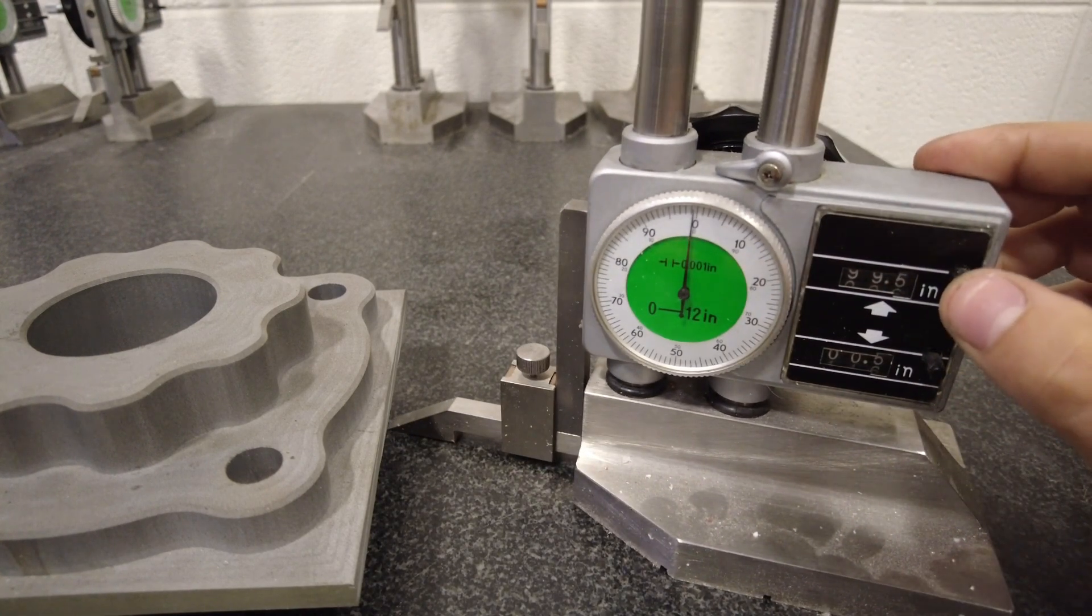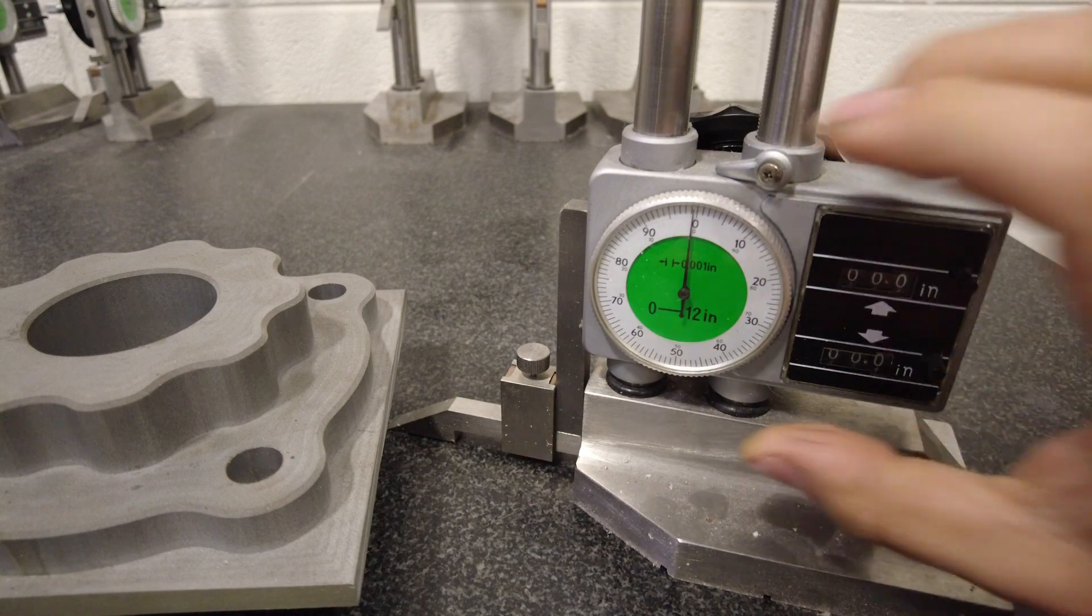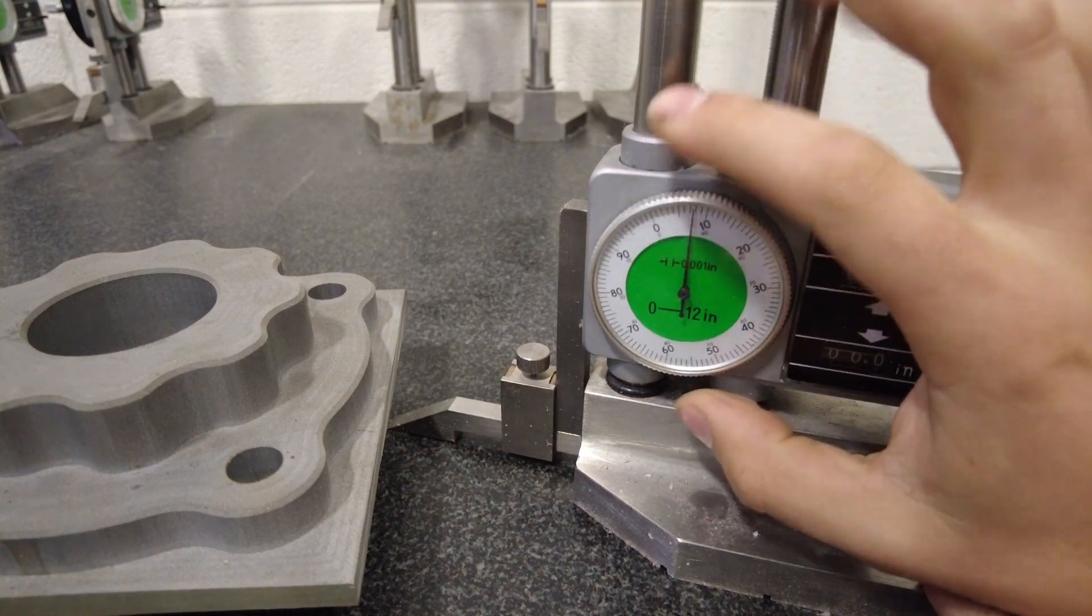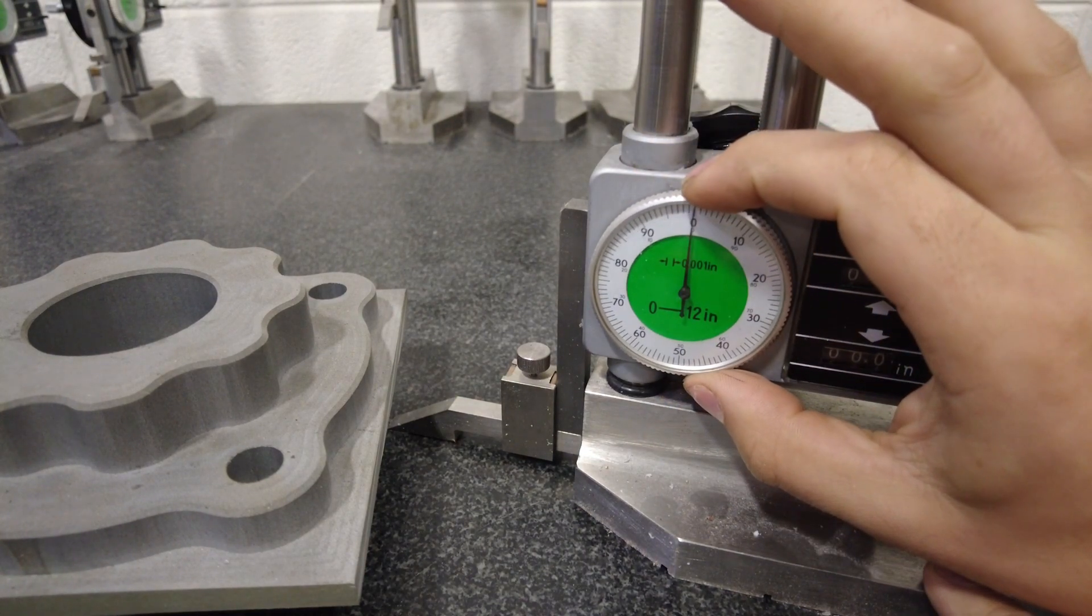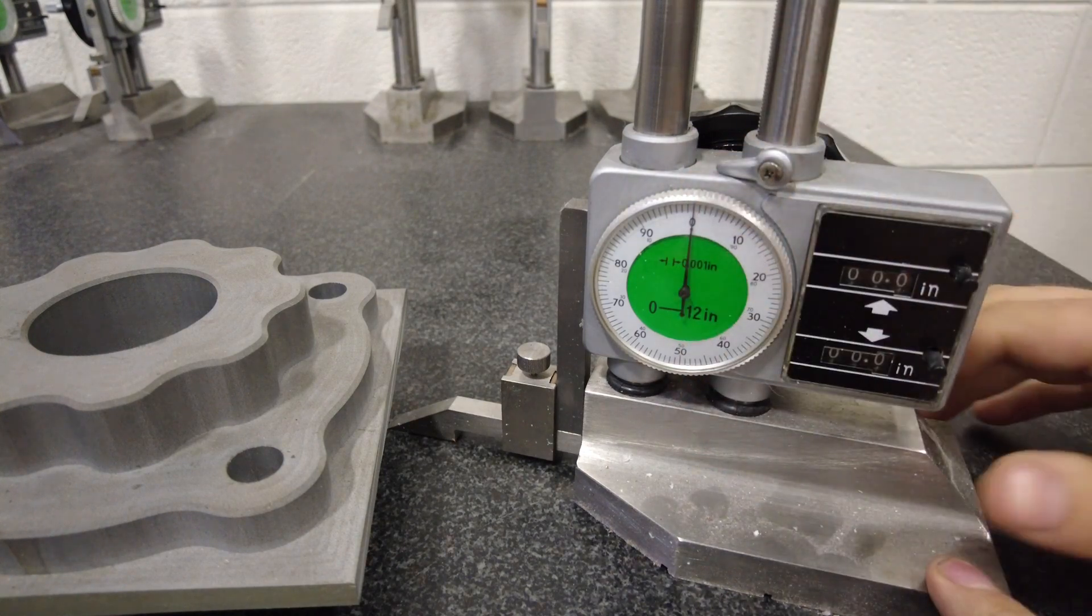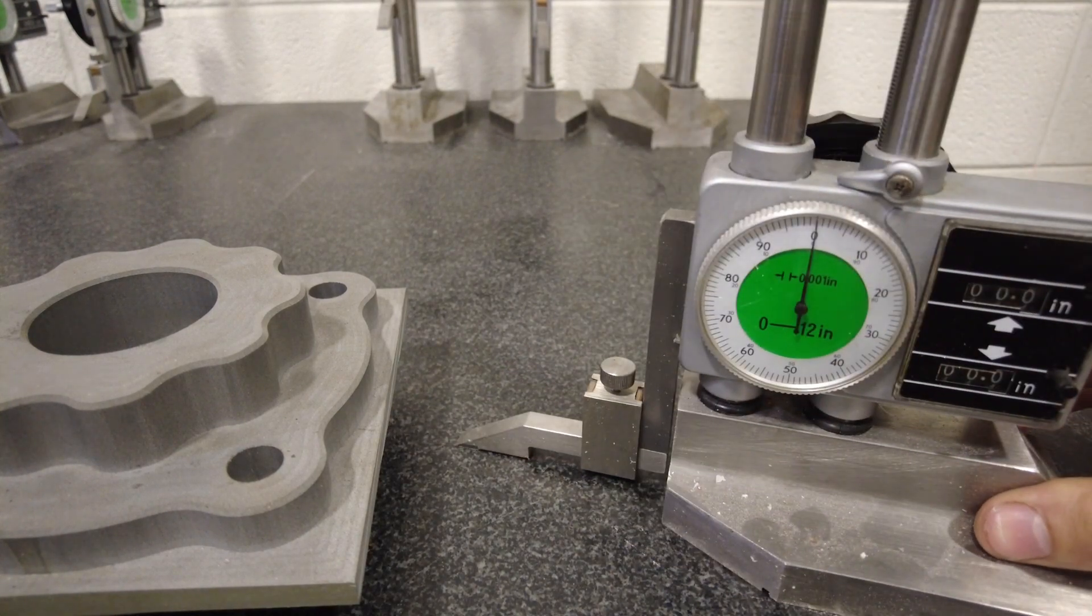You can do that just by pressing these black buttons. If this is not at zero, you can move this dial here so that the zero lines up with the needle. Once that's all zeroed, we can go ahead and measure.